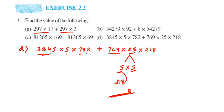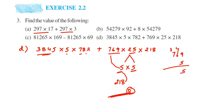So let's try multiplying 5×769: 5×9=45, 5×6=30+4=34, 5×7=35+3=38. So 769×5 = 3845, which is exactly the first number in the expression! So we'll multiply 769 by this one single 5, and the other 5 will remain, along with 218.